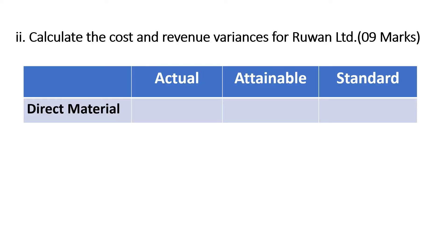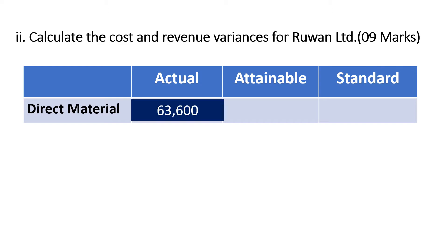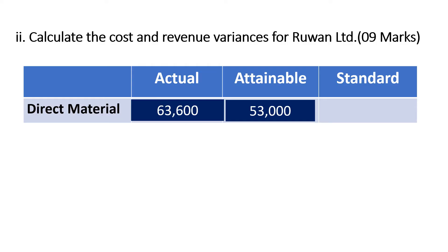Part 2 focuses on variance analysis — calculating cost and revenue variances for nine marks, meaning one mark per variance. Starting with direct material: 10,600 kilograms were used at an actual price of 6 rupees per kilogram, giving a total actual cost of 63,600 rupees. The attainable or adjusted standard uses the actual quantity of 10,600 multiplied by the standard price, giving a revised standard of 53,000.